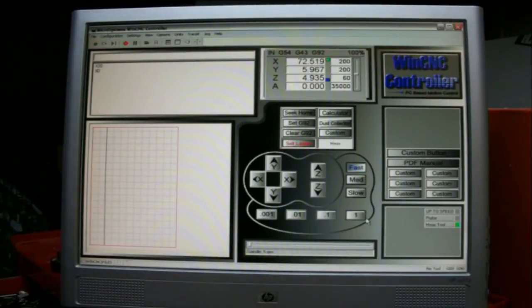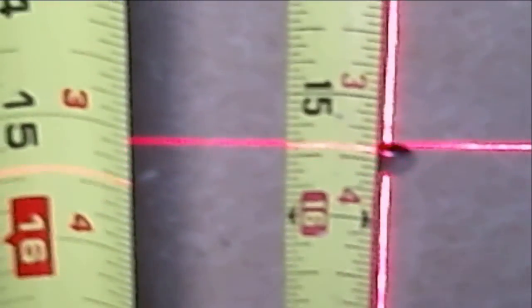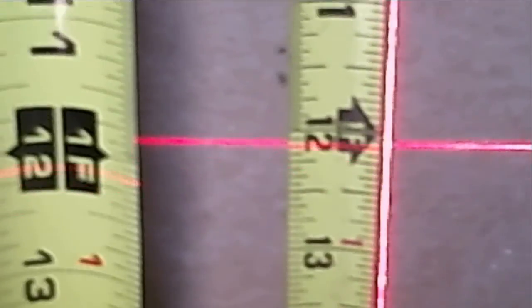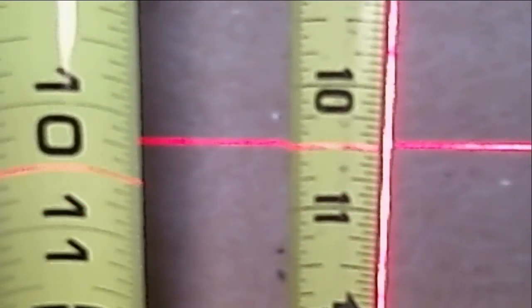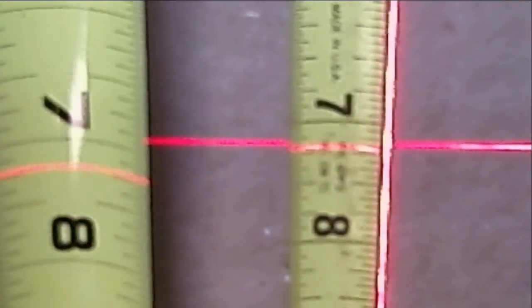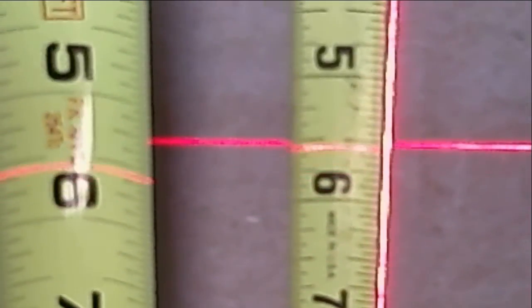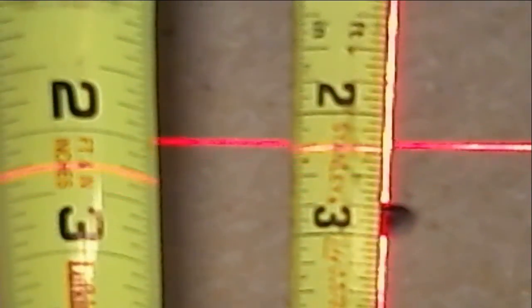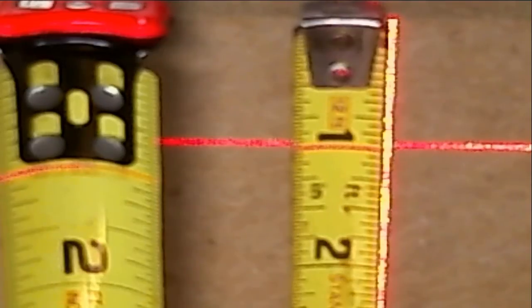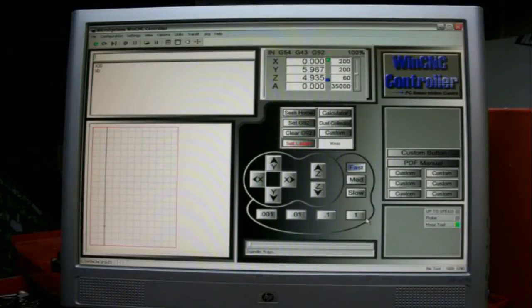And it will slowly move back until the laser is pointed at the point. And now it's right back on the one inch mark again. So now I can shut WinCNC down.